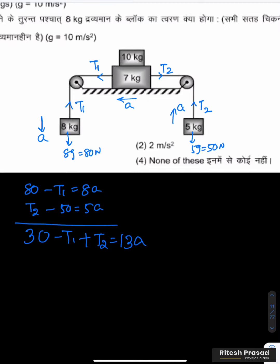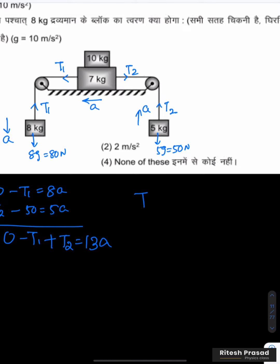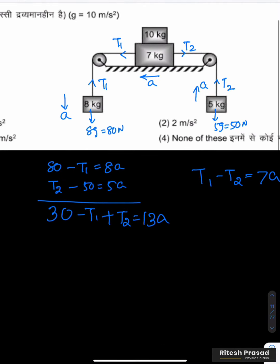So we have to write net force is equal to ma for 7 kg. So T1 minus T2 is equal to 7a. So T1 minus T2 cancel, plus T2 minus T2 cancel, so 30 is equal to 20a.